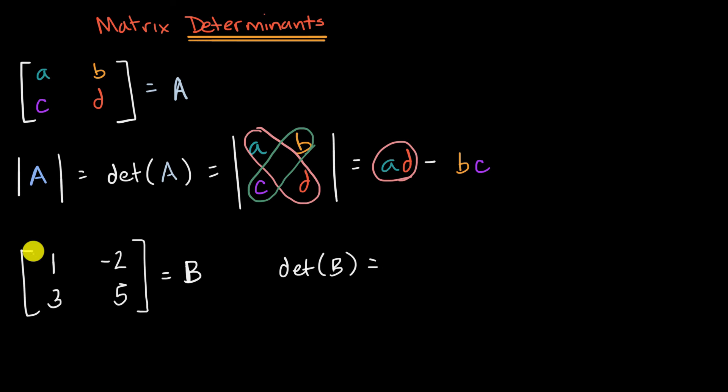All right, now let's do this together. So you're going to have the product of these two numbers. So we have one times five, minus the product of these two numbers, which is three times negative two.